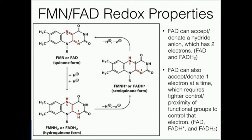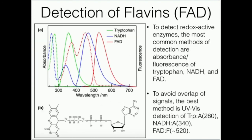So flavins can transfer two electrons if that's needed, or they can transfer one. An example of where it transfers one electron would be in the case of cytochrome P450 reductase. And by the way, we have a video explaining that mechanism as well.